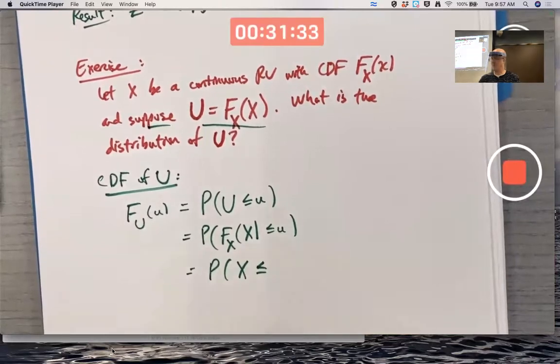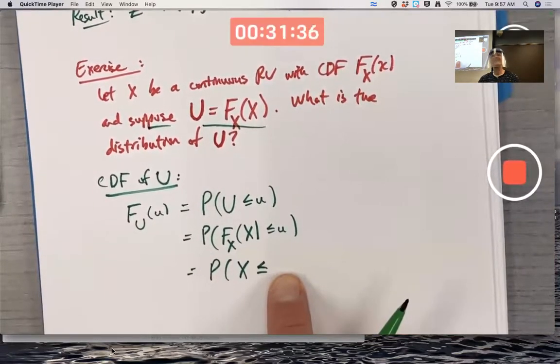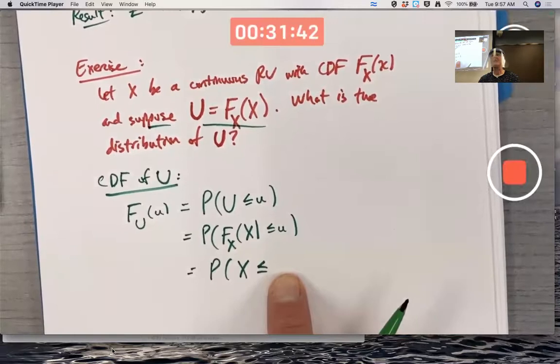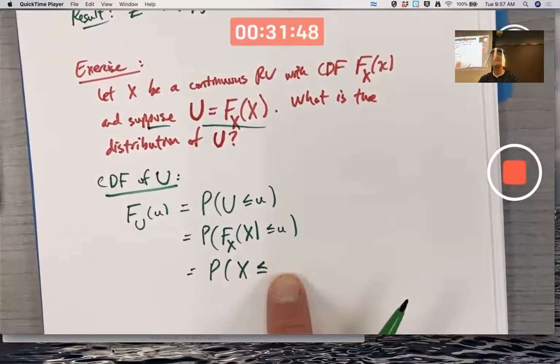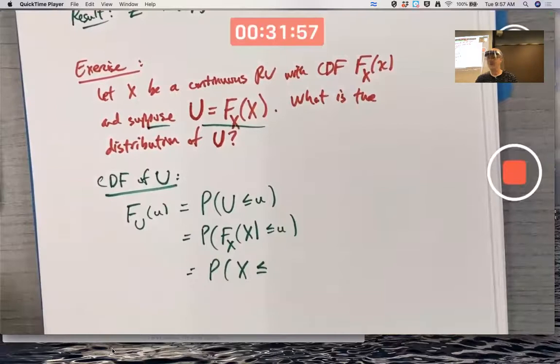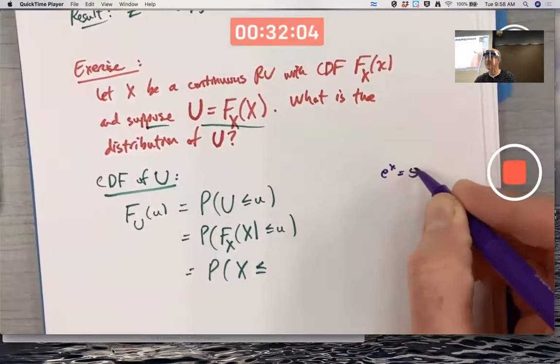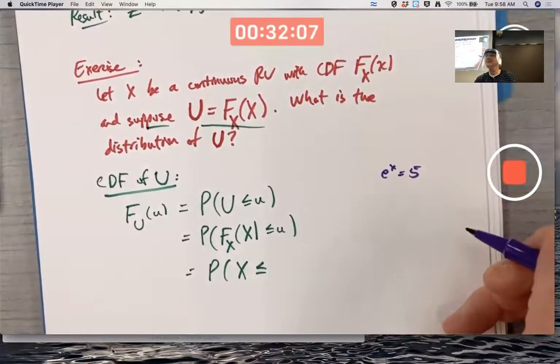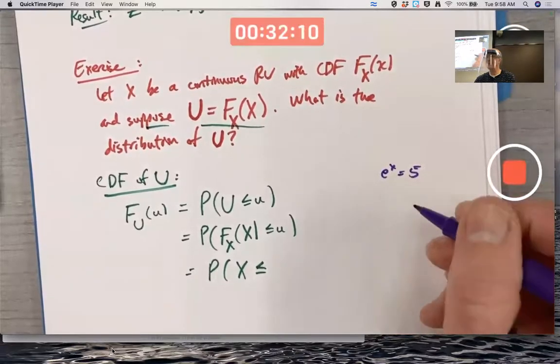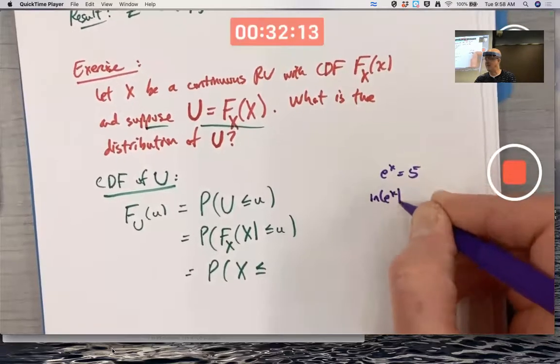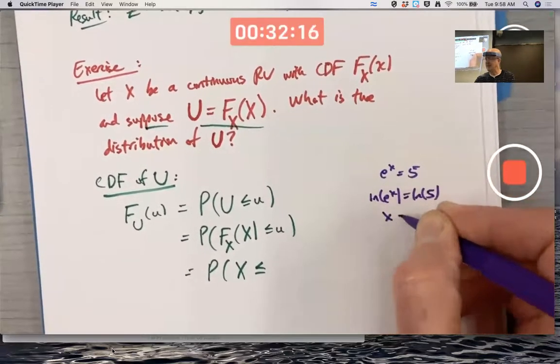Could I do something like this? When you try to solve an equation like e to the X equals 5, what do you do? Take the natural log of both sides. What's the relationship between e to the X and natural log of X? They are inverse functions.